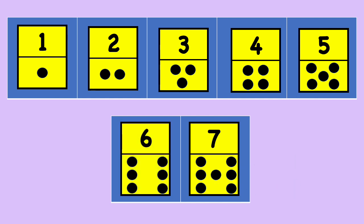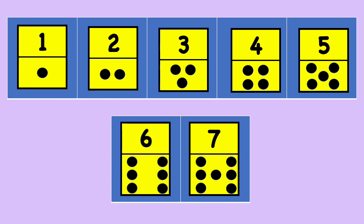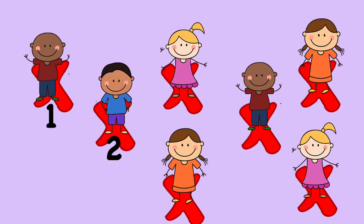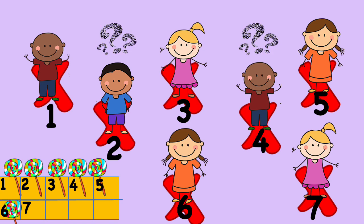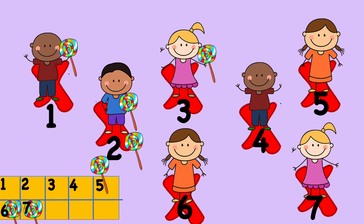Let's put one more dot card after 6. This card has one more dot than the dot card of 6 — the number is 7. Let's put one more cross so one more child can stand on it to make seven children. The box has six lollipops — how many more do we need to make seven? That's right, one more. Now seven children can each get one lollipop.